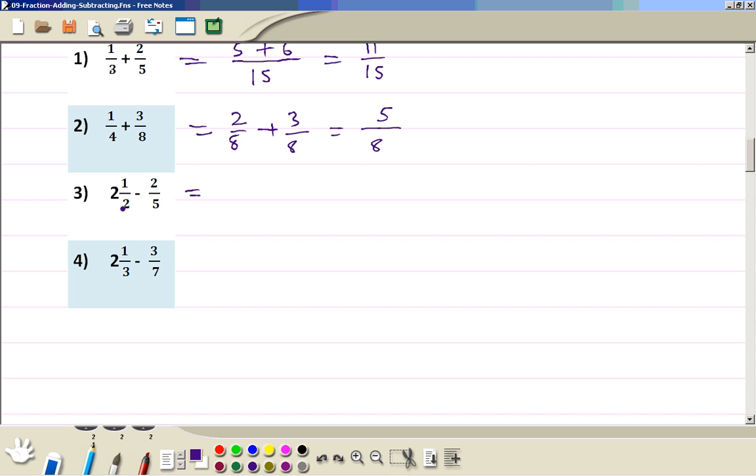Change to top-heavy fraction, 4 plus 1 is 5 over 2. 2 fifths, 2 fifths, cross-multiply. 5 times 5 minus 2 times 2 divided by 2 times 5. This can be written as 2 and 1 tenth.